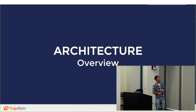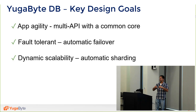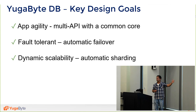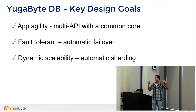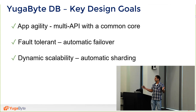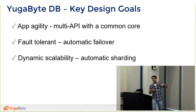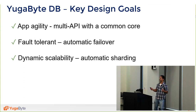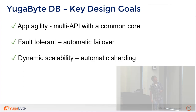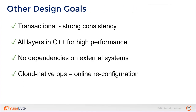Now let's go into the architecture. It would be good to view this through the lens of: how does it enable app agility? How do we enable multi-API with a common database core? How do we do fault tolerance across different APIs with automatic failover? And how do we do dynamic scalability with automatic sharding across APIs?